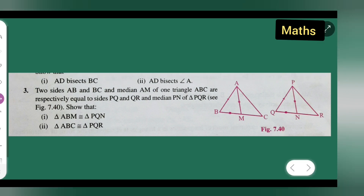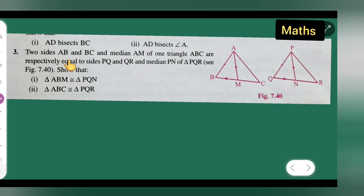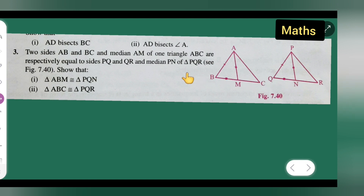First, let me take down the question. There are two triangles given. In triangle ABC, AB and BC are two sides, and AM is the median. Similarly, in triangle PQR, the corresponding sides are PQ and QR, and PN is the median. We have to show that triangle ABM is congruent to triangle PQN.